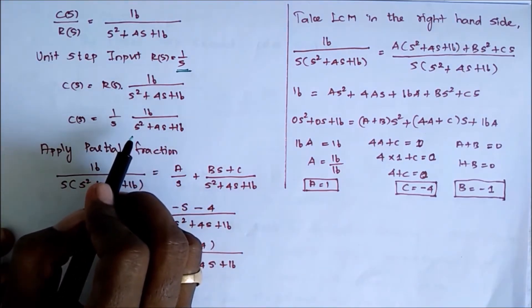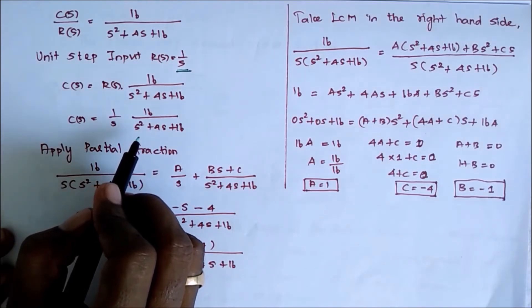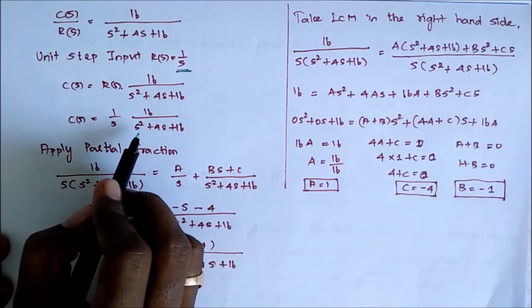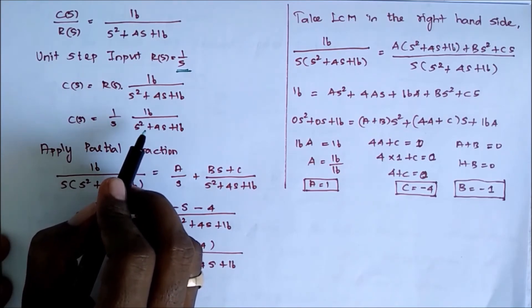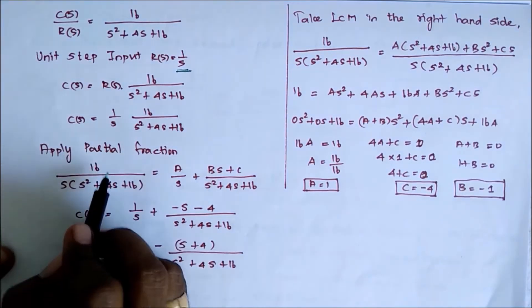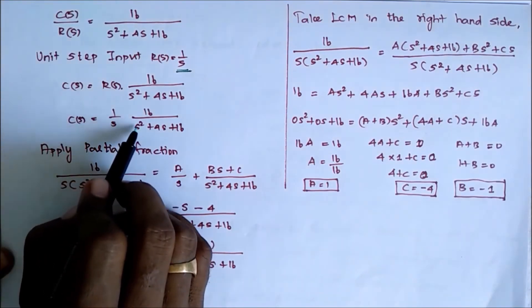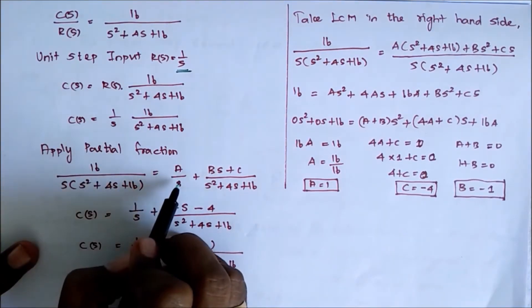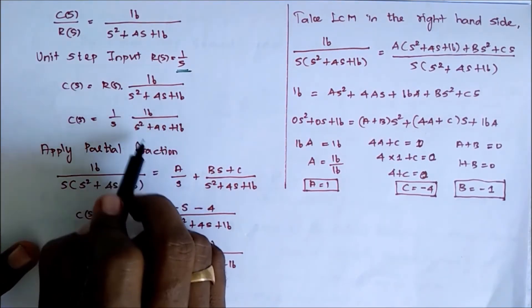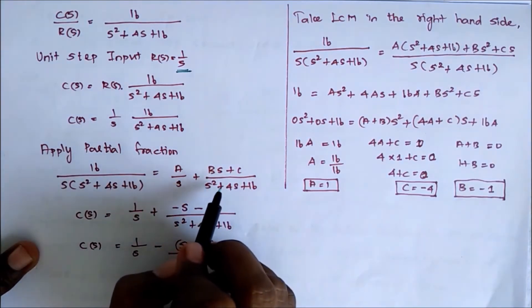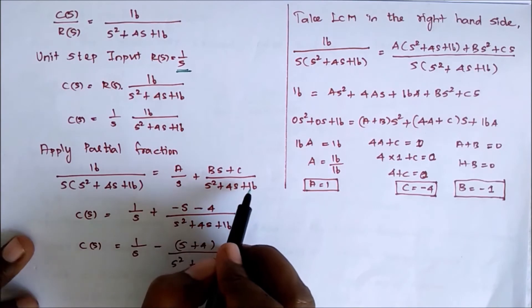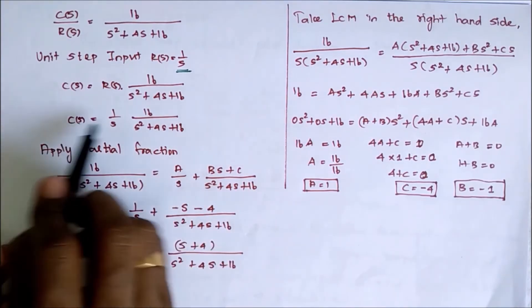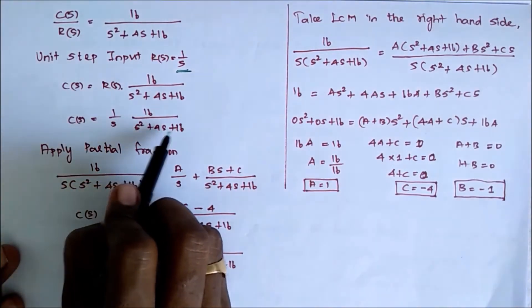Our final requirement is C(t). To get C(t), we apply the inverse Laplace transform. But this is not a standard form to apply the inverse Laplace transform directly. Therefore, we apply partial fractions. S alone is one separate pole, then a quadratic equation. The standard form is A divided by S, plus Bs plus C divided by S squared plus 4S plus 16. So C(S) equals 16 divided by S into S squared plus 4S plus 16, and we equate these two.